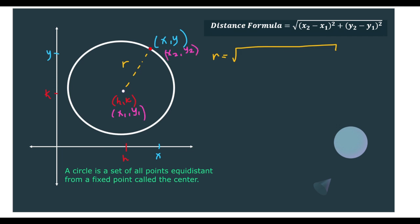Therefore, by substitution, we can say that that would be x sub 2 minus x sub 1. So it would be (x minus h) squared plus y sub 2 minus y sub 1. So it would give you (y minus k) squared.